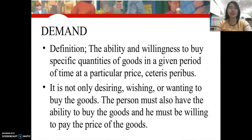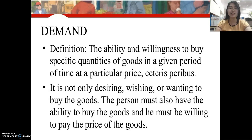Microeconomics also talks about demand and supply. When we say demand, it refers to the ability and willingness to buy specific quantities of goods in a given period of time at a particular price, ceteris paribus. It is not only desiring or wishing to buy goods — the person must have the ability, the purchasing power, be willing to pay the price, and have the desire to possess that specific thing.